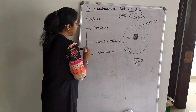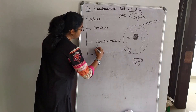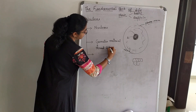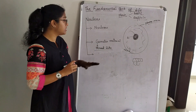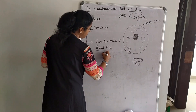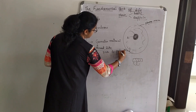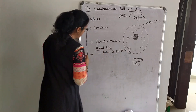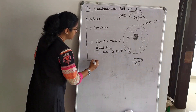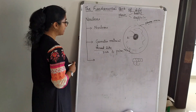Chromatin material consists of thread-like structures present in the nucleus. They are made up of DNA and protein. DNA stands for deoxyribonucleic acid and it carries hereditary material.